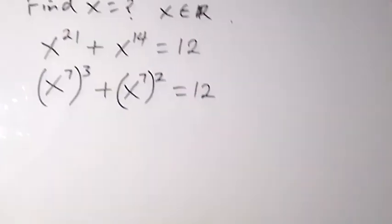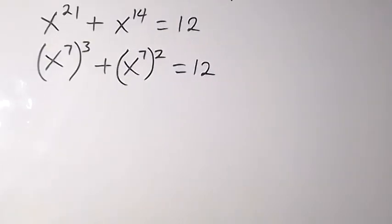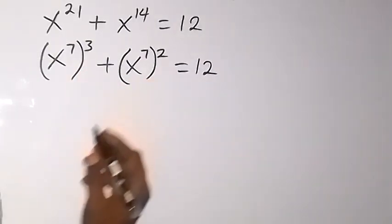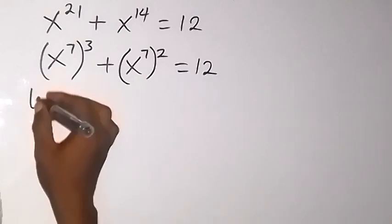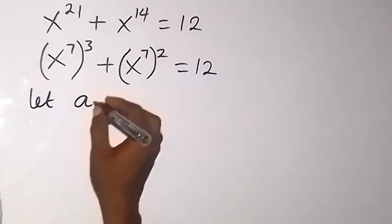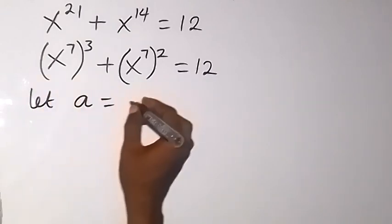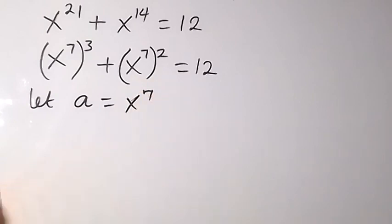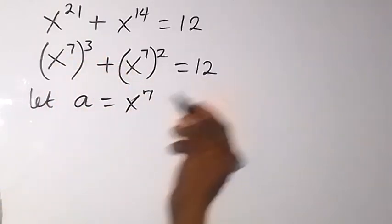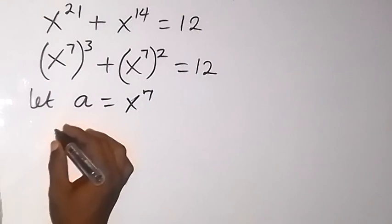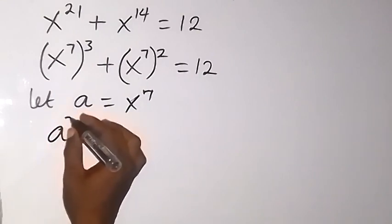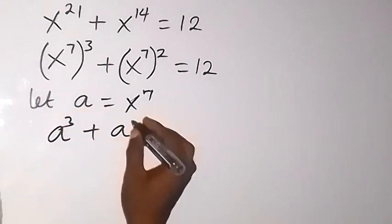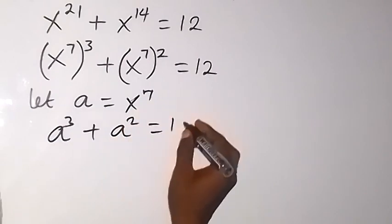From here, since we have x raised to power 7 appearing in both terms, we can substitute. Let a be equal to x raised to power 7. We now rewrite the equation as a raised to power 3 plus a raised to power 2 equals 12.